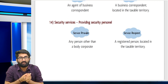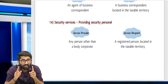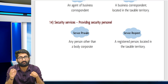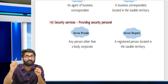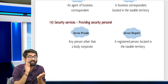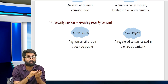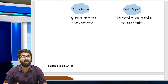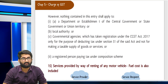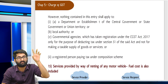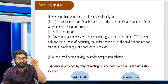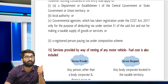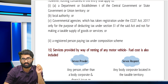Entry 14: Security services — any person other than body corporate giving security personnel services to a registered person located in the taxable territory — the registered person pays under RCM. Exception: security services given to a government department, local authority, government agency, or a registered person paying under the composition scheme — RCM is not applicable in those cases.